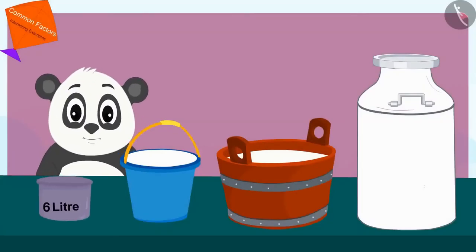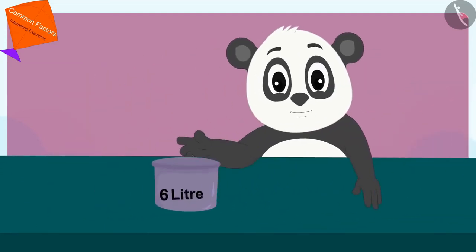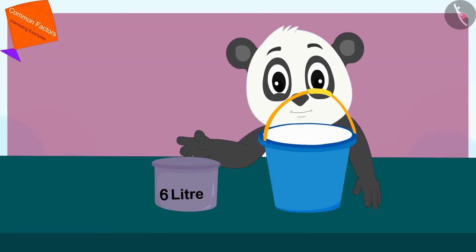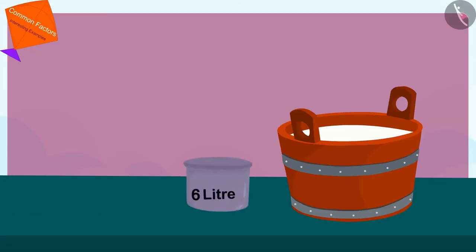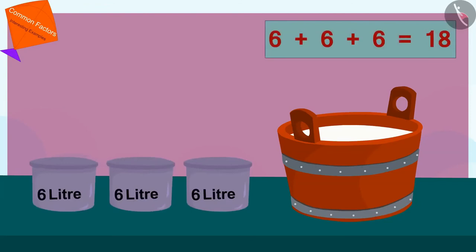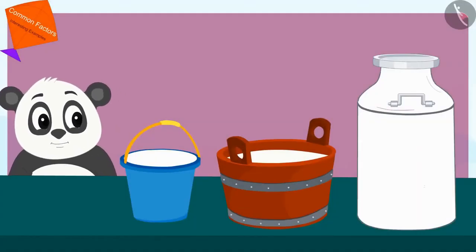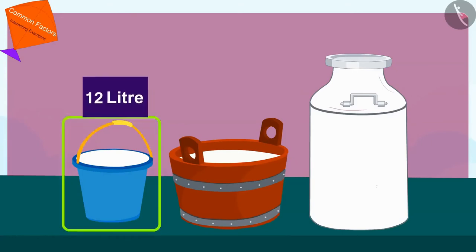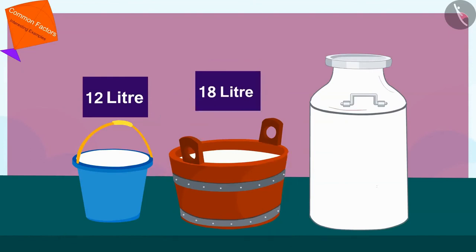Golu began measuring the milk filled in all those pots with a 6-liter vessel. To measure the milk filled in the first vessel, Golu used the 6-liter pot twice. For the next pot, he used it three times. And to measure the milk filled in the last pot, Golu used his 6-liter vessel four times. In this way, Golu came to know that 12 liters of milk are filled in the first pot, 18 liters in the second, and 24 liters of milk in the third pot.